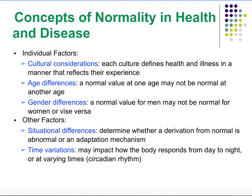Concepts of normality in health and disease: there are individual factors that will determine concepts of health and disease. Those individual factors include cultural considerations — each culture defines health and illness in a manner that reflects their experience. There are also age-related differences; for example, a normal value at one age may not be normal at another age. Normal values in an infant versus someone in the prime of their life versus the elderly population will change, and you have to be aware of that.